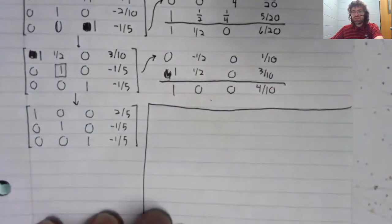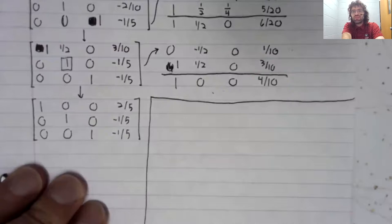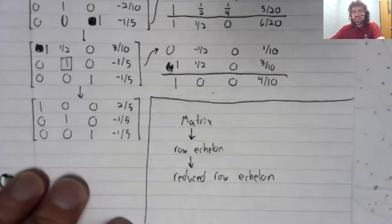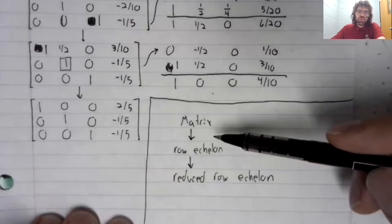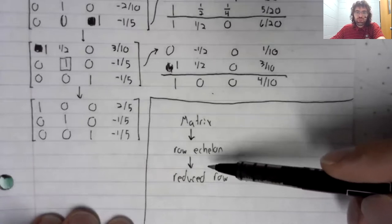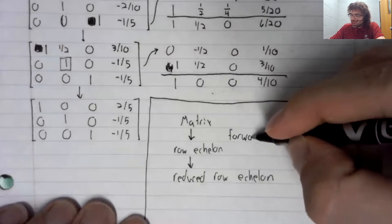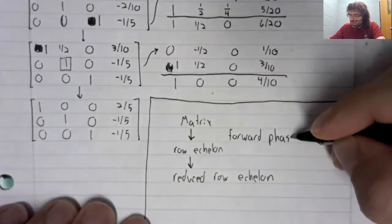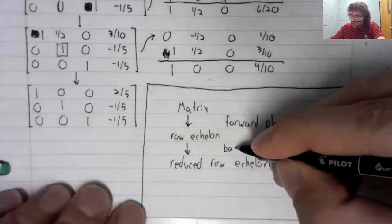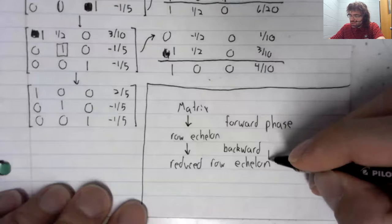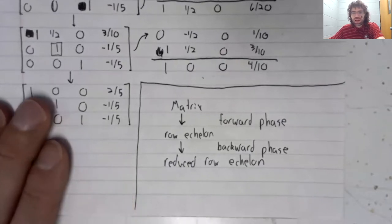One quick piece of terminology. This Gauss-Jordan elimination breaks into two pieces. We didn't show the details in this video, but the first step is to put the matrix into row echelon form. Then we put the matrix in reduced row echelon form. In the context of this process, putting the matrix into row echelon form is called the forward phase. And once you've done that, putting the matrix into reduced row echelon form is called the backward phase.